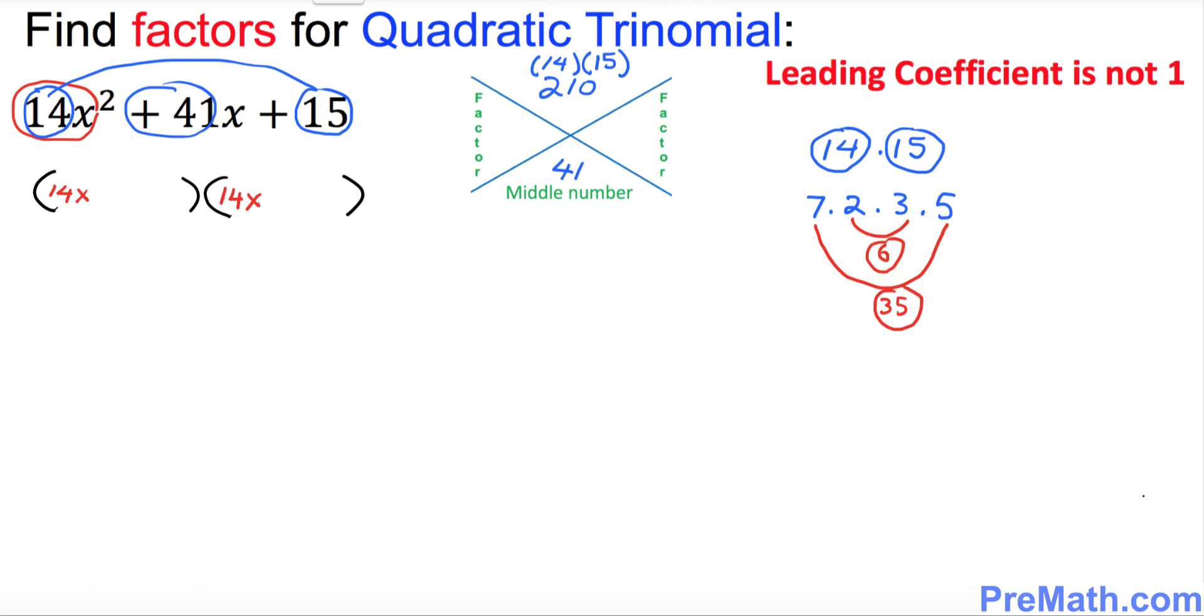I want you to just go ahead and put down 6 right up here and 35 right up here. And the signs of both are going to be positive 6 and positive 35. So let's go ahead and put down positive 6 in the first parentheses and positive 35 in the second parentheses.